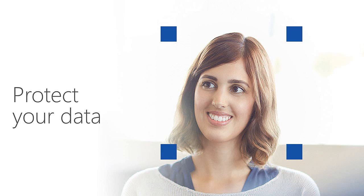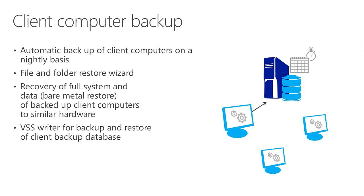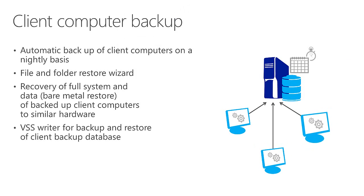With that as context, let's give an overview of the different features, organized around our three pillars. The first is protecting your data. One of the most interesting things when Essentials was introduced — and even the home server edition of Windows before that — was the ability to do complete client computer backups. As you add computers into the Essentials environment, they get set up automatically to be backed up on a nightly basis, or you can determine the time window that works best, having the client PCs backed up to the central Essentials server.